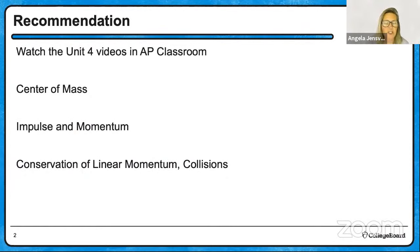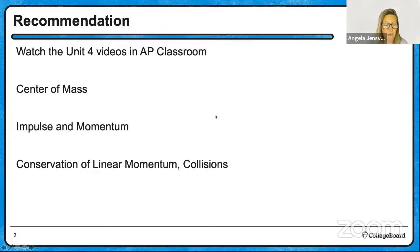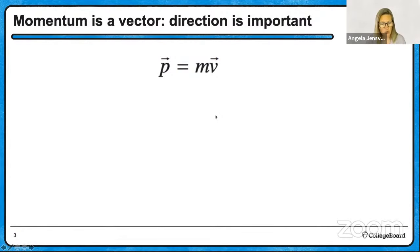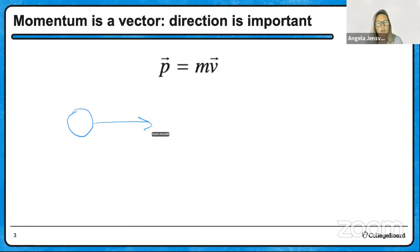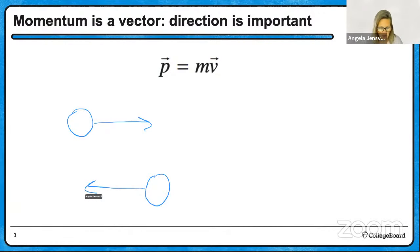My first recommendation is to watch the Unit 4 videos in AP Classroom. Those videos go over the basic content on Center of Mass, Impulse, and Conservation of Momentum. Today we're just going to do a bunch of practice problems regarding those topics. The first thing to know is that momentum is a vector, so direction is important. If an object is moving toward the right, it has positive momentum; if moving toward the left, it has negative momentum.